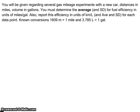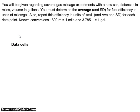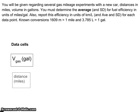The first thing I want to do is think about what I'm given. I know I'm given volume in gallons and distances in units of miles. Those are going to be my data cells, because those are actually going to be measured data. I'm going to have a column for the volume of gas in gallons and a column for distance in miles — that's where my data is going to be.